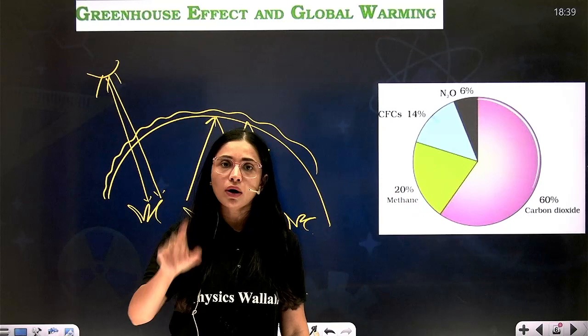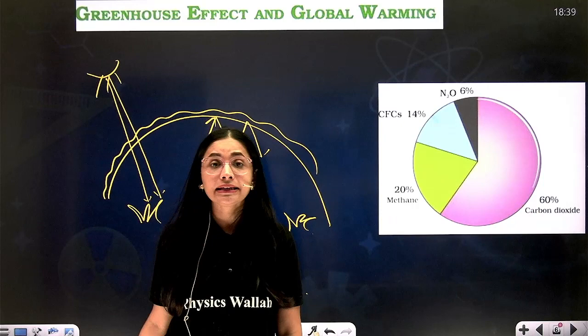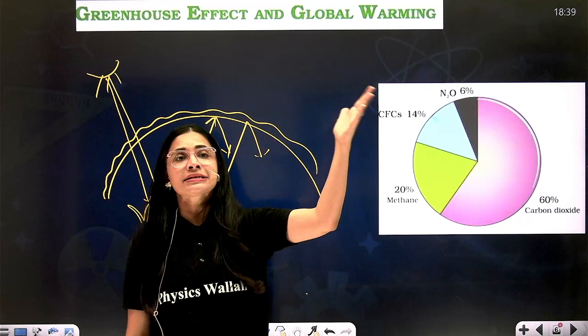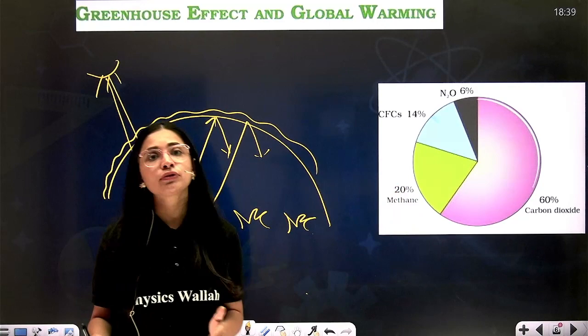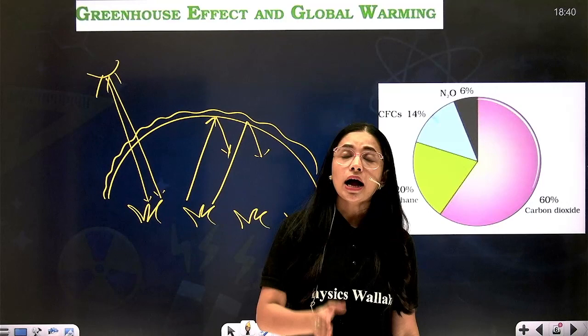The temperature of the earth is maintained through the greenhouse effect. But now, due to human activity, the concentration of greenhouse gases is increasing. The amount of CO2 and other gases are increasing, causing a large amount of heat radiations to be trapped and re-emitted back, leading to an unnecessary increase in temperature. That is called global warming. So greenhouse effect is good, but excessive trapping of heat radiations in the earth's atmosphere leads to global warming — that is the trouble.